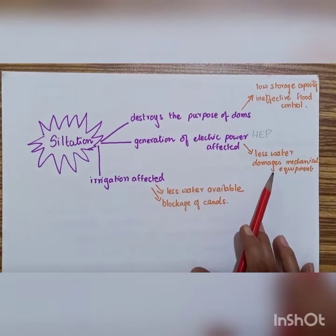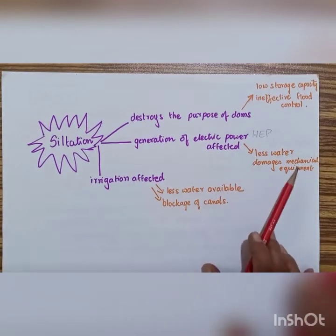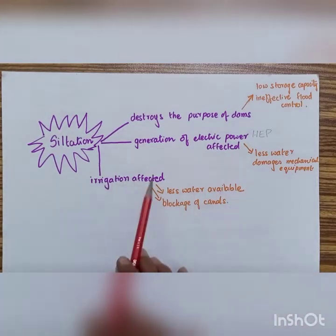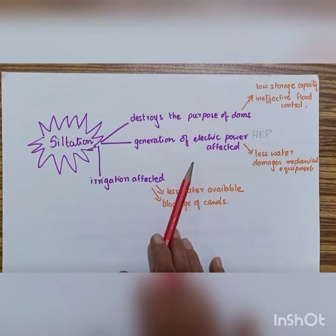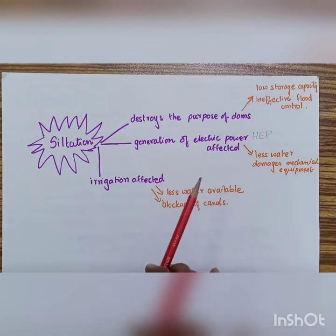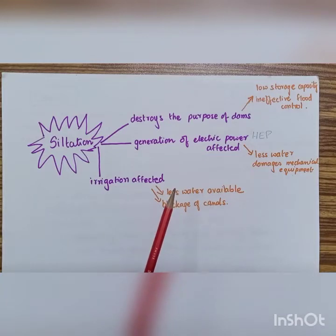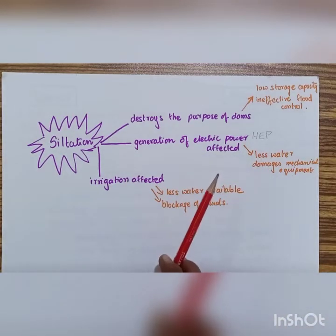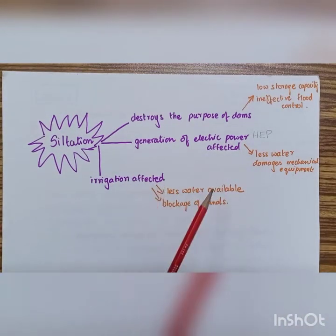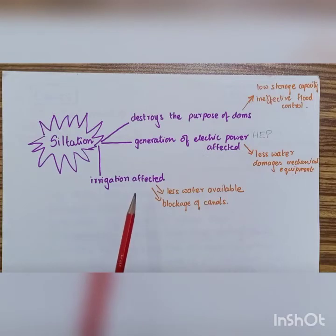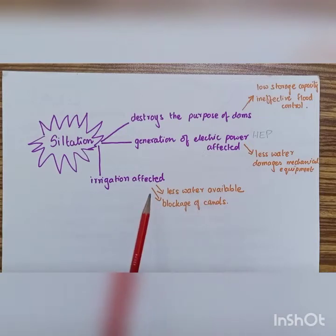The silt also damages the mechanical equipment. Irrigation is also affected because we are an agricultural country and we require a lot of water for irrigating the agricultural land. Dams are storage structures which provide water throughout the year to these fields for growing crops. If silt is deposited in the canals, then this leads to the blockage of the canals and also results in less water available for the crops for their cultivation.